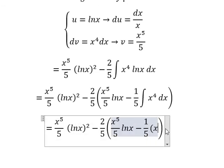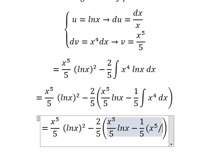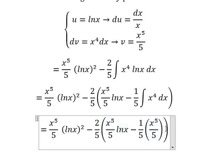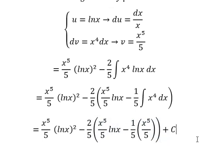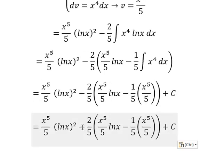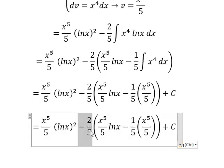And then I will put the constant c. So we have negative 2 over 5 multiplied by this one and this one.